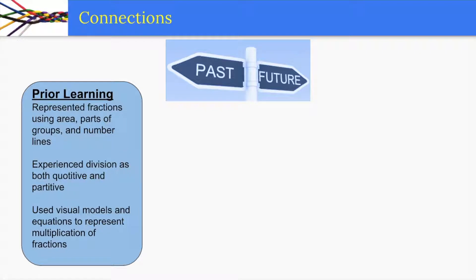It is important that students make connections between math they have already learned and math they're going to learn. Prior to this unit, students represented fractions using area, parts of groups, and number lines. They also experienced division as both quotative and partitive. Students used visual models and equations to represent multiplication of fractions.